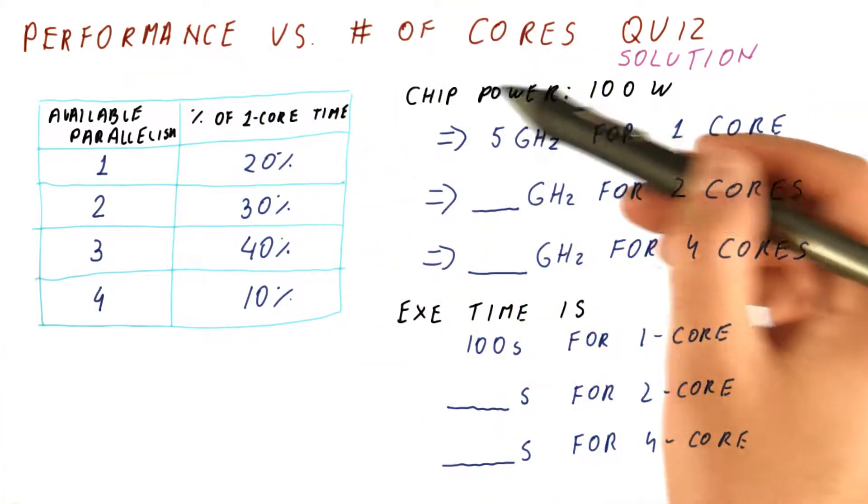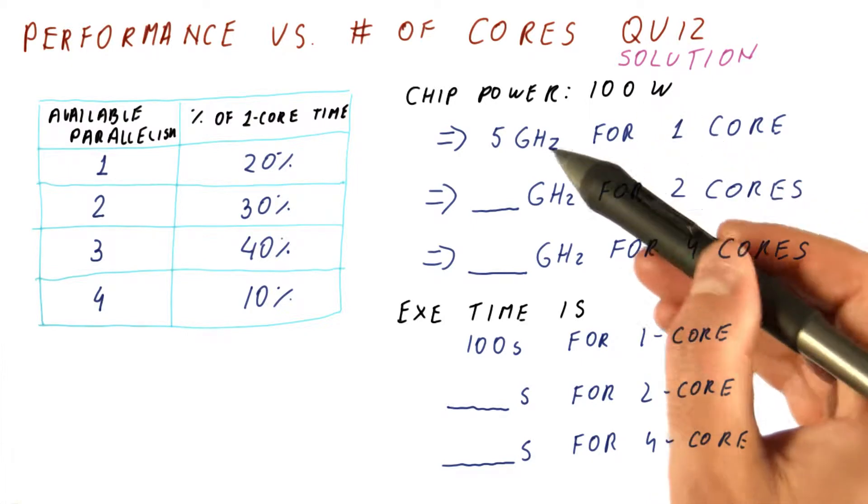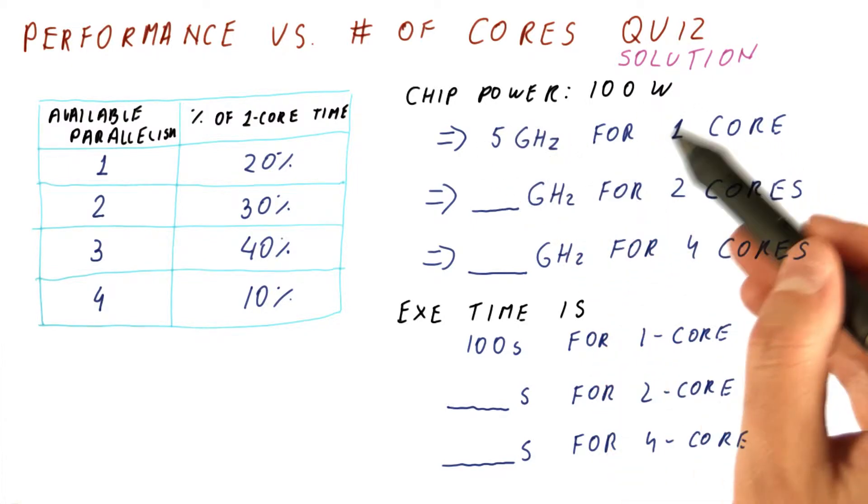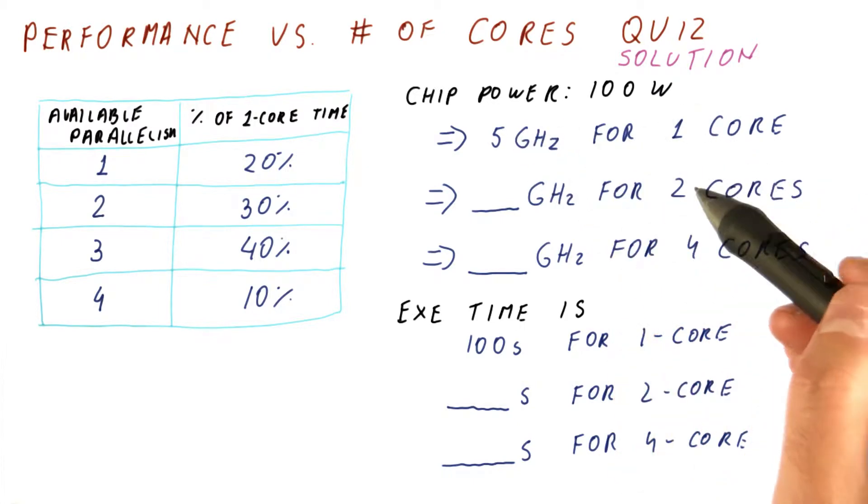Let's look at the solution to our performance versus number of cores quiz. If chip power is 100 watts and we can operate one core, if that's the only one on the chip, at 5 gigahertz, how many gigahertz do we get for two cores?